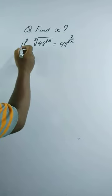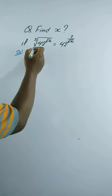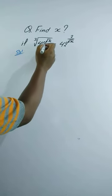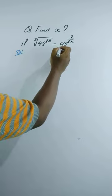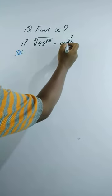Find x. The third root of 42 to the power square root x is equal to 42 to the power 2 by square root x.